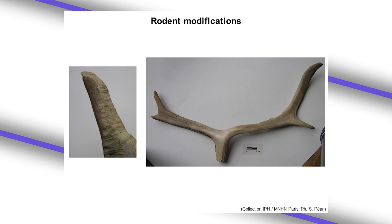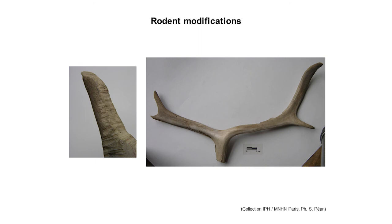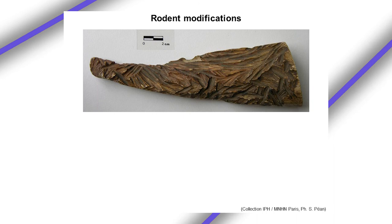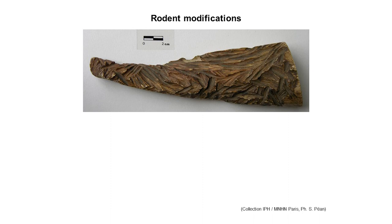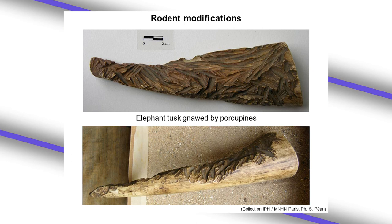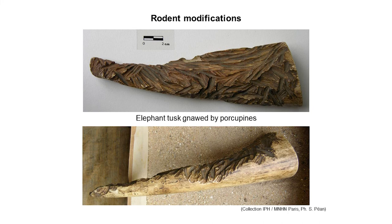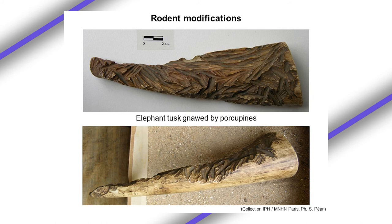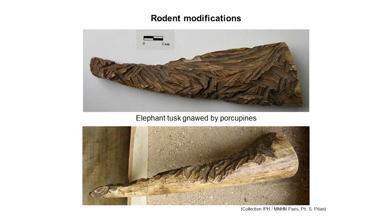An example is shown on reindeer antlers. Large rodents such as porcupines can produce very large modifications — almost one centimeter wide grooves — illustrated here on an elephant tusk fragment from Africa, showing how large rodents can seriously modify bone material.